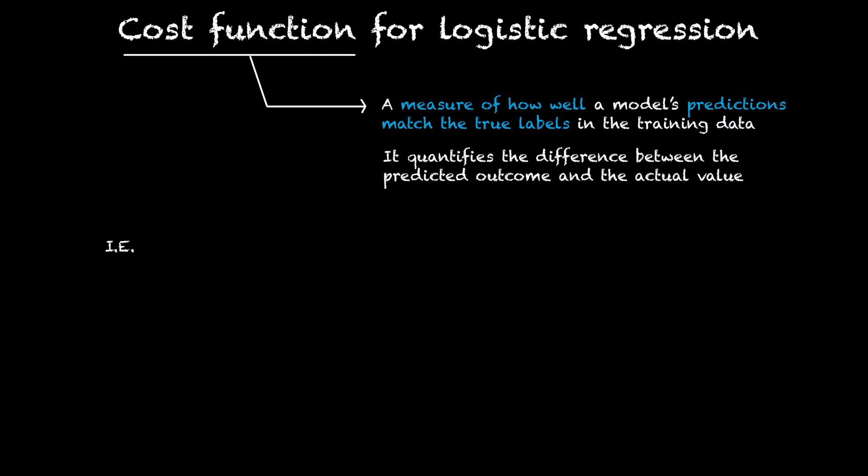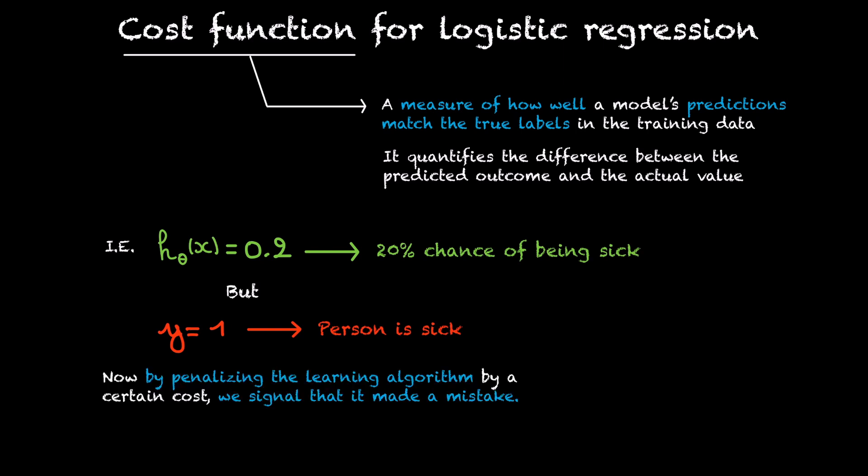So, for example, if our learning algorithm predicts that a person has 20% chance of being sick, but it turns out our training example has the label y equals 1, meaning that the person was in fact sick, we will penalize the learning algorithm by a certain amount, basically telling the algorithm it made a mistake.